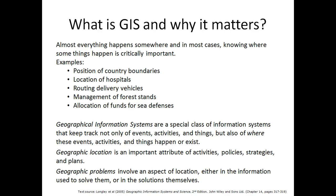GIS systems are a special case of information systems that keep track of not only events, activities, and things, but also of where these events happen, where these activities took place, and where these things happen or exist. Geographic location is an important attribute of activities, policies, strategies, plans, and geographic problems — which involve aspects of location, because geography or location is very important either in the information used to solve a problem or in the solutions themselves.